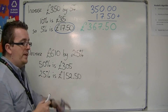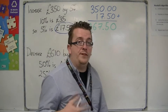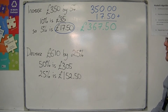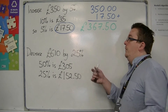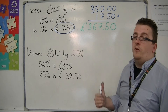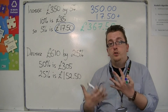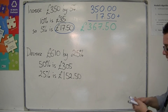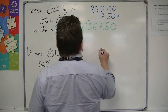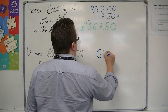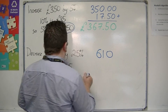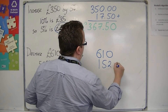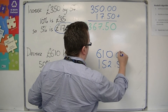You could do that in a number of different ways to find the actual percentage — you can use a calculator if you like. But things like 25% you should be able to do by hand. So we're going to take £610.00 and subtract £152.50.